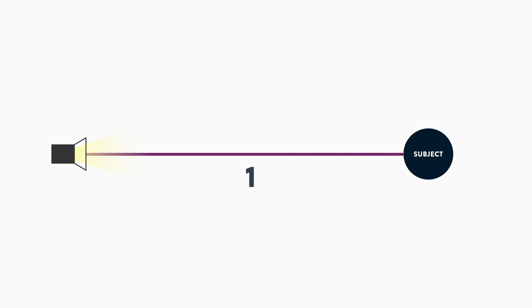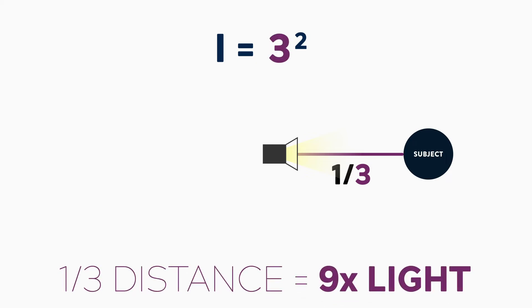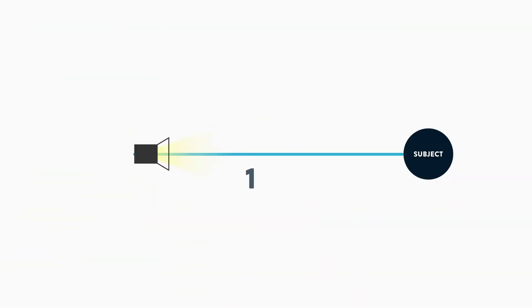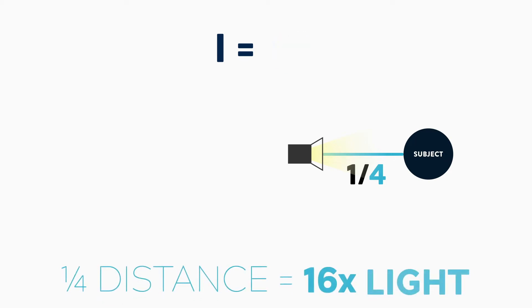Here's another example. What if we want to move our light in to one-third of the original distance? Well then the equation becomes intensity equals 3 squared, and we have nine times the amount of output. And one final example: let's say we want to close that distance to one quarter the original distance. Then our equation becomes intensity equals 4 squared, so we have 16 times the original intensity.